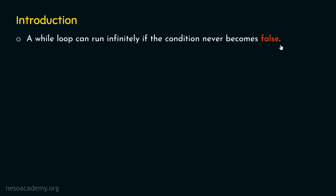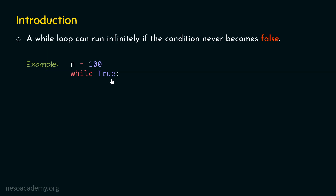Before that, let's understand how an infinite loop works with one example. Let's say n is equal to 100. We write: while True. This is the while statement, and in place of a concrete condition, we write True. This means we will never get false here — it is always true. This is one way to write an infinite while loop: the condition never becomes false, hence the loop will run infinitely.